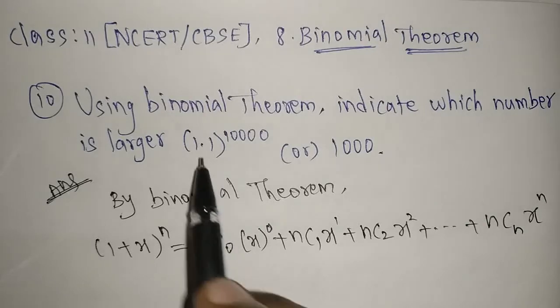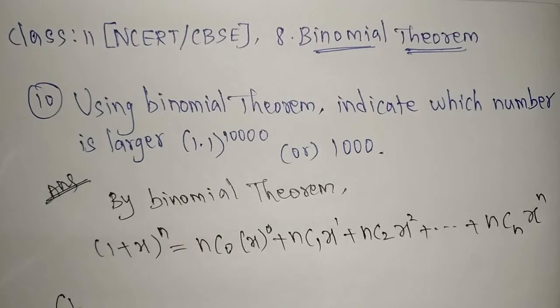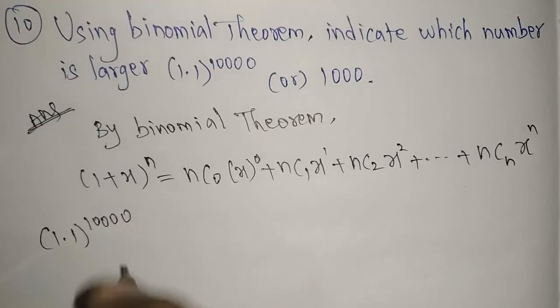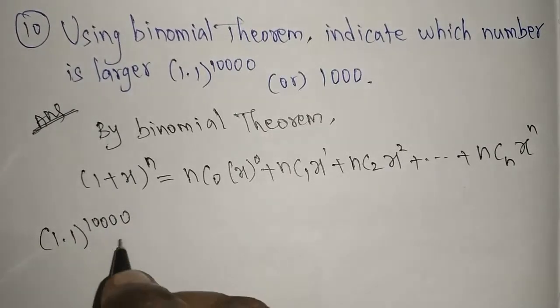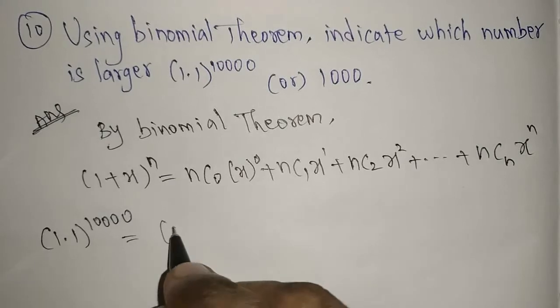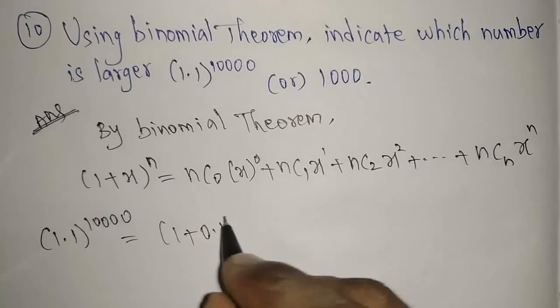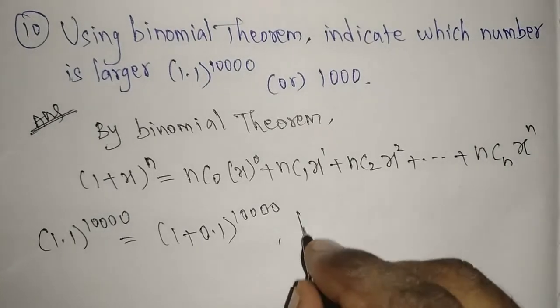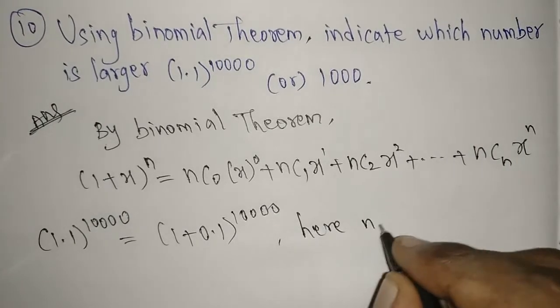The n value is 10000. So we have 10000C0·(0.1)^0 + 10000C1·(0.1)^1 + 10000C2·(0.1)^2, and it will go up to that number 10000.